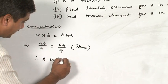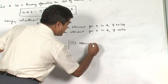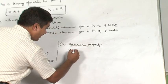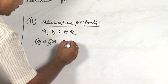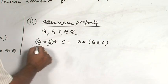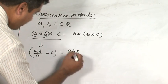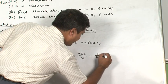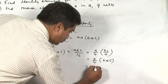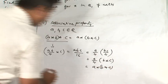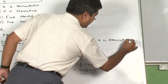For associativity, take A, B, C belonging to Q and verify A★(B★C) = (A★B)★C. Taking the left-hand side: A★(B★C) = A★(BC/4) = A(BC/4)/4 = ABC/16. Similarly, (A★B)★C = (AB/4)★C = (AB/4)(C)/4 = ABC/16. Therefore LHS equals RHS, and star is associative on Q.